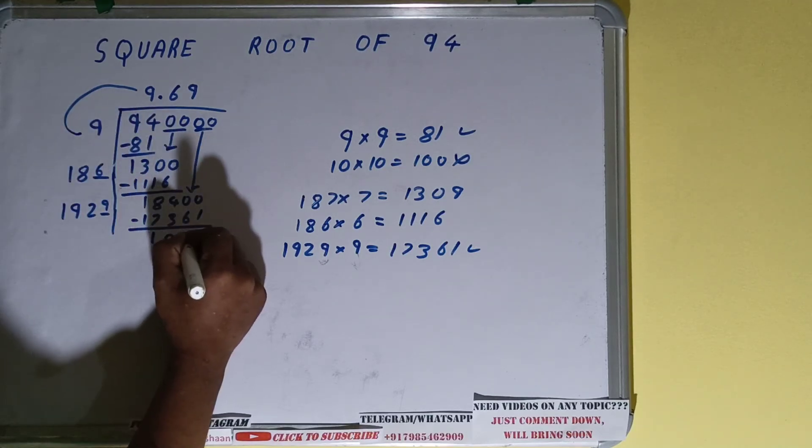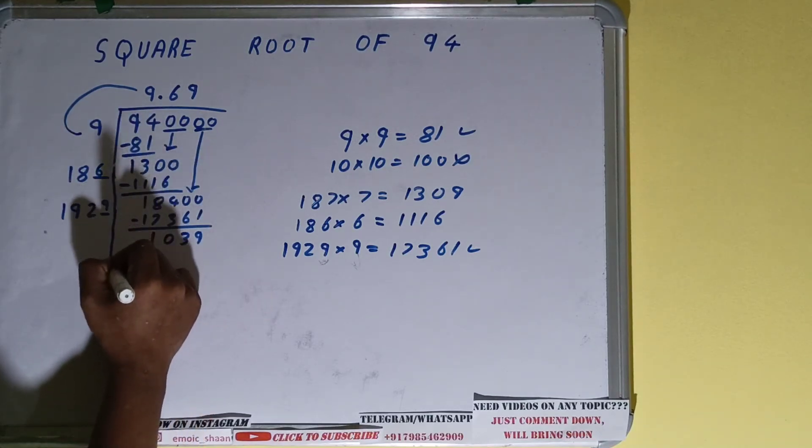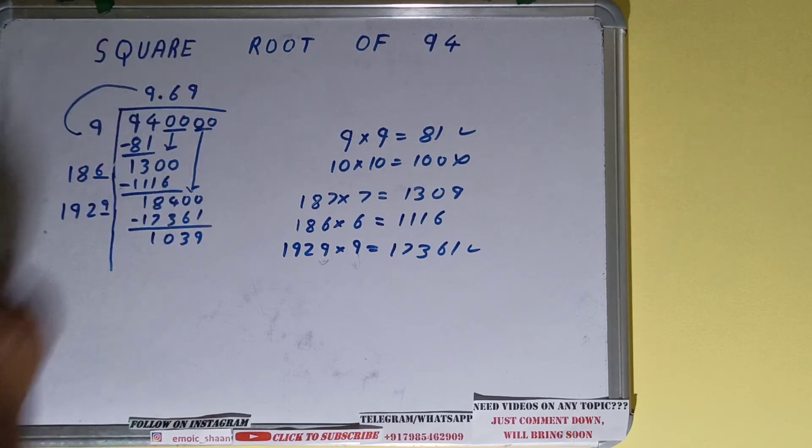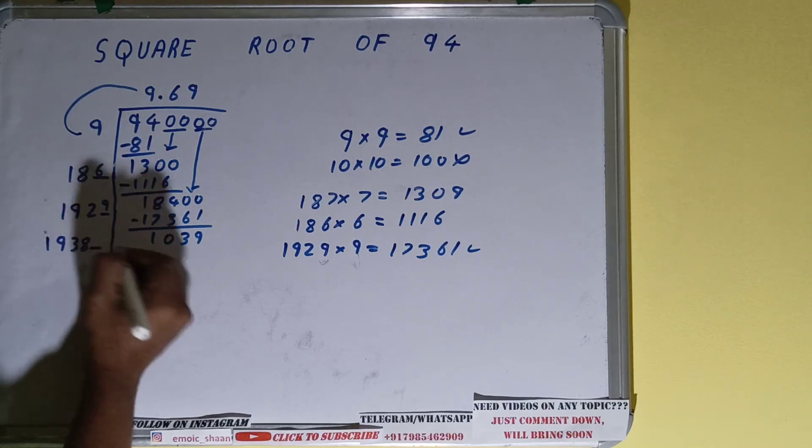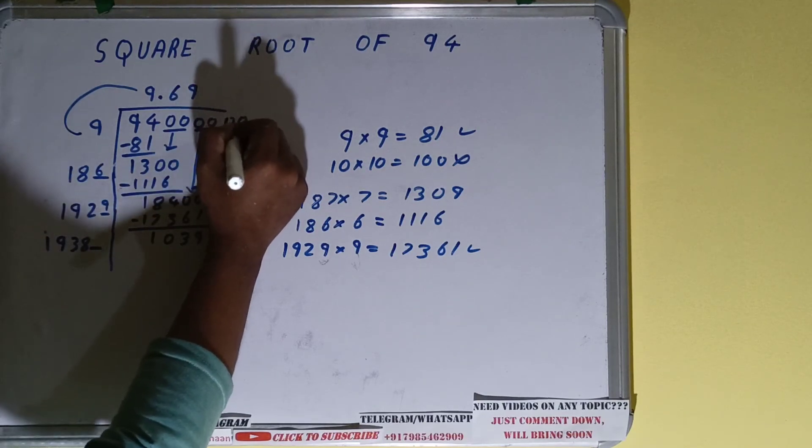Subtract it and we will have left 1039. Now again we did 1929 into 9, we did right, so add both. So it will be 1938 and one digit extra over here. Bring one more pair of zeros down.